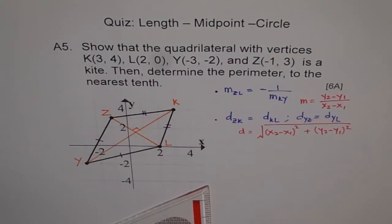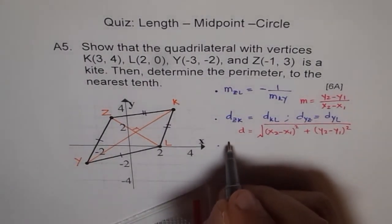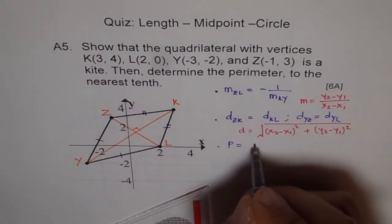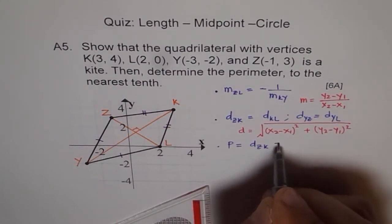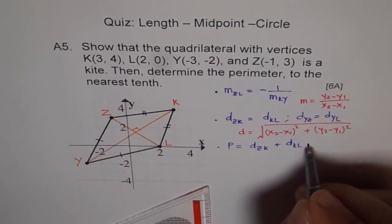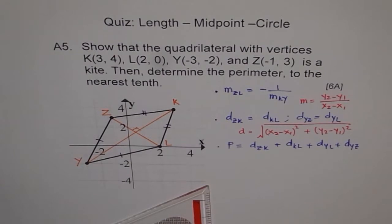You will find all these distances because you need to calculate the perimeter. Once you prove those relationships, find the perimeter by adding all the distances: distance ZK + distance KL + distance YL + distance YZ. Write the units as units. Try to do all these steps and explain your work.